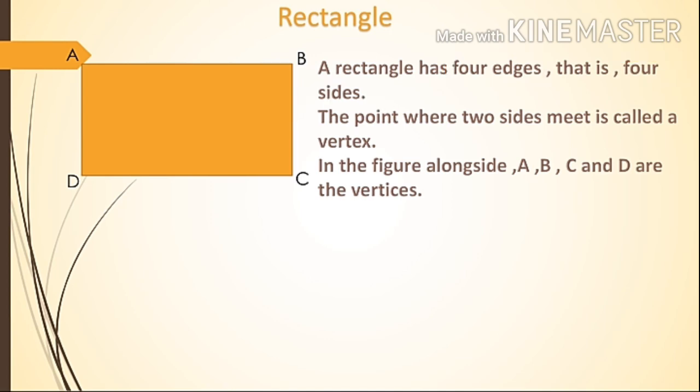Now we are going to learn rectangle. A rectangle has four edges, that is four sides. Rectangle law four edges means char. The point where two sides meet is called a vertex. In the figure alongside, A, B, C and D are the vertices.